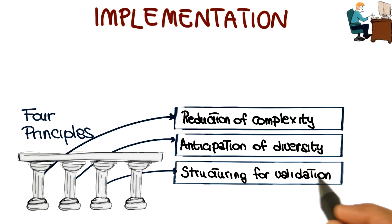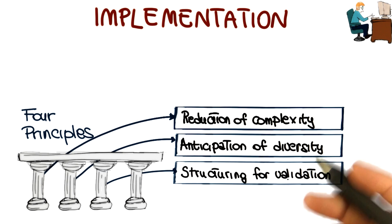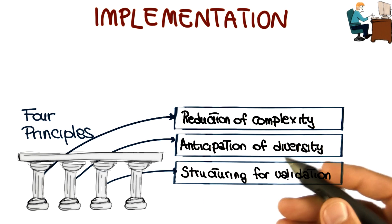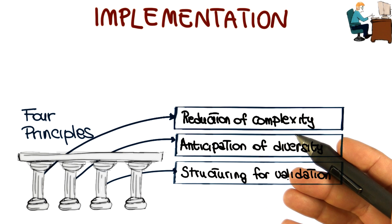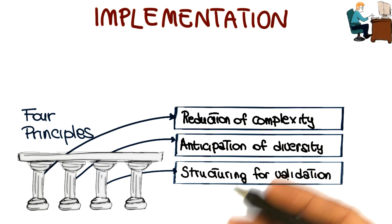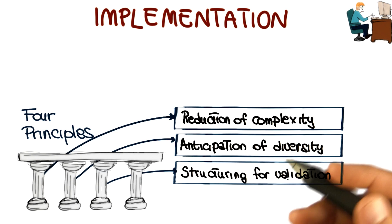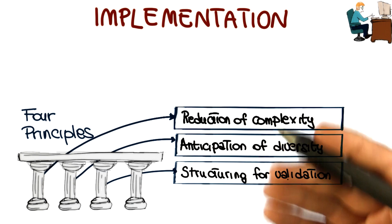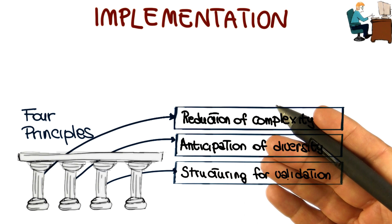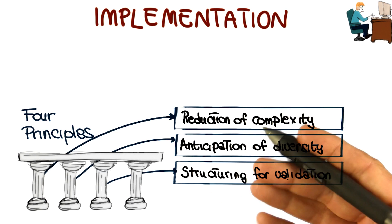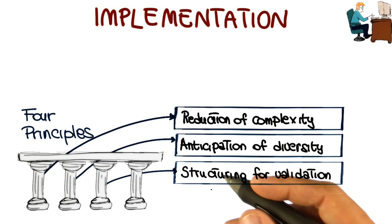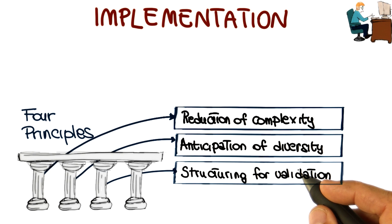The third pillar is the structuring for validation, also called design for testability. What this means is that we want to build software so that it is easily testable during the subsequent validation and verification activities.